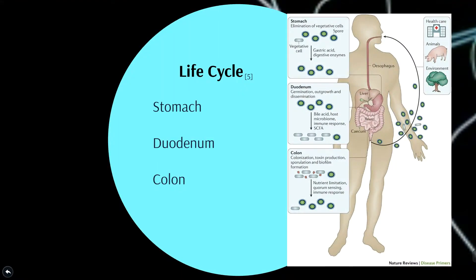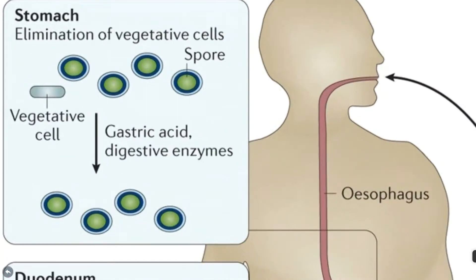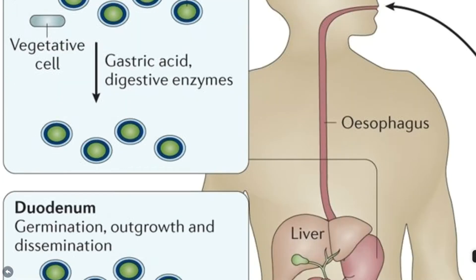For the life cycle, three sources of infection — healthcare, animal, and environment — are indicated. A range of host factors influences the C. difficile life cycle, as well as the number of spores and vegetative cells encountered. Note that passage through the stomach eliminates most vegetative cells, but spores survive, and spores germinate and grow in the intestine.